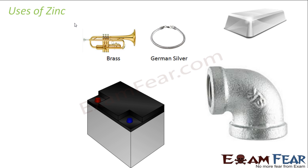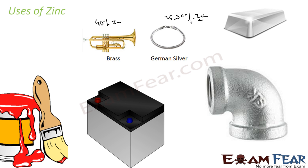Brass and German silver - in brass you have almost 40% zinc, in German silver you have almost 25 to 30% zinc. It is also used to make dyes and paints.